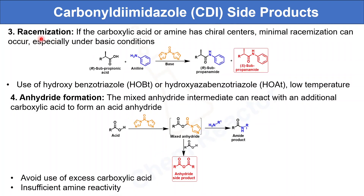Next up is racemization. If the carboxylic acid or amine has a chiral center, minimal racemization can happen, especially under basic conditions. For example, taking an R-substituted propanoic acid and aniline under CDI conditions can form the expected R-propanamide, but along with that, it can racemize the R-configuration to the S-substituted propanamide. We can avoid this by using hydroxybenzotriazole or hydroxyazabenzotriazole as an additive and running the reaction at low temperature.